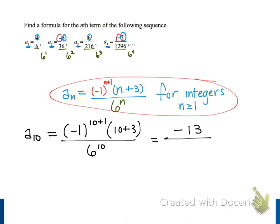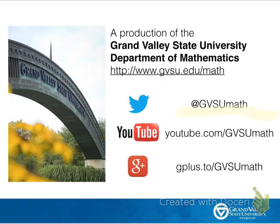6 to the 10th is a pretty large number, but if we multiply it out, our result is 60,466,176. And that's our final result for the 10th term in our sequence. And we could use this formula to find any other term in our sequence, too. Thanks for watching!